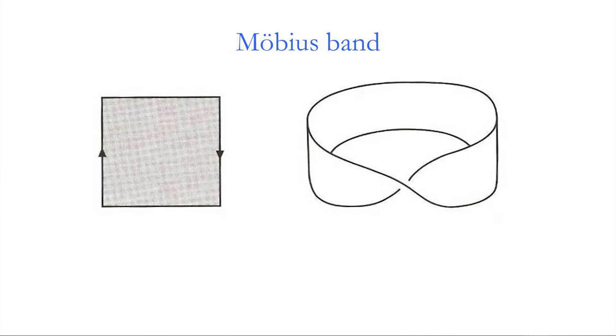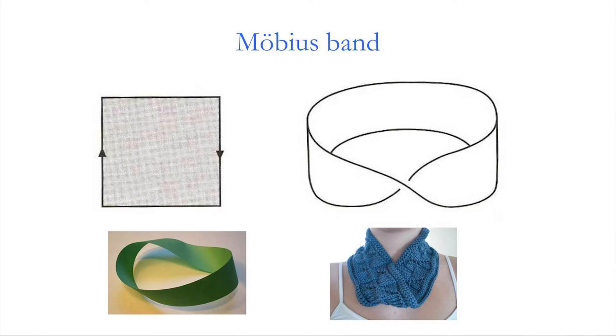Now for the Möbius band. Again we have a rectangle, but this time we identify just one pair of opposite sides with opposite orientations — the left arrow points up, the right arrow points down. To join them so the arrows face the same way, the only option in three dimensions is to give the strip a half-twist before connecting the two ends. The result is the Möbius band, shown here.